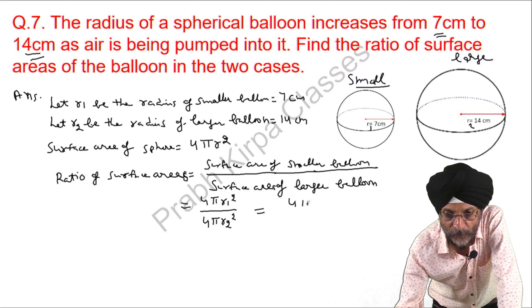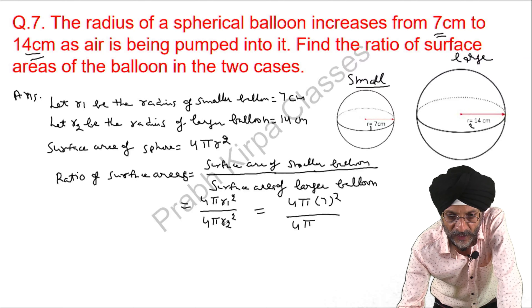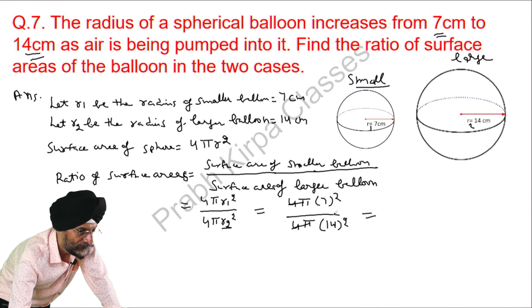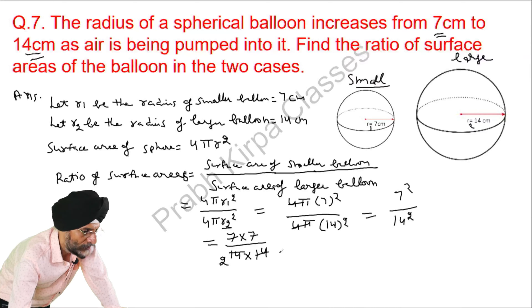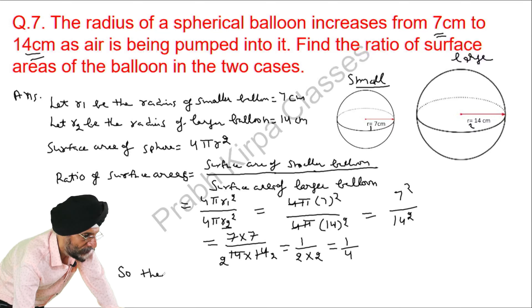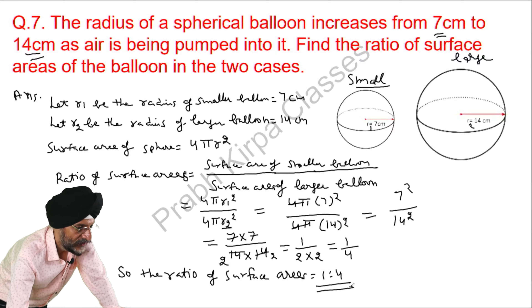Now we will put in the relevant values: 4 pi times 7 squared, divided by 4 pi times 14 squared. We will solve it — 7 into 7, 14 into 14. The 4 pi cancels on both sides, and 7 will cancel with 14. The ratio of surface areas comes out to 1 to 4.